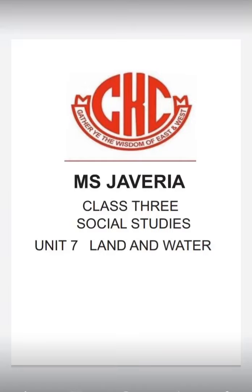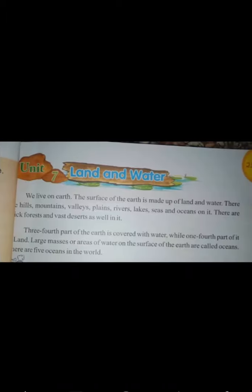Assalamualaikum students, I hope you all are fine and safe. Today we are going to start unit number seven, which is about land and water. In this unit we will read about our earth and the land and water present on it. We live on earth, and the surface of the earth is made up of land and water. We all know that we live on planet Earth, which is the third planet from the Sun.